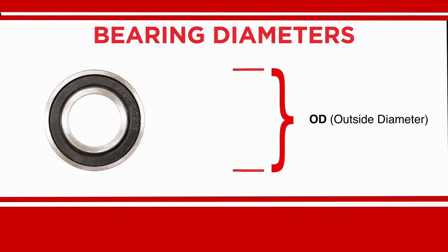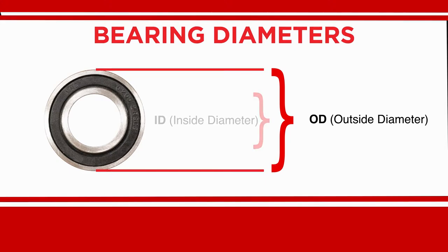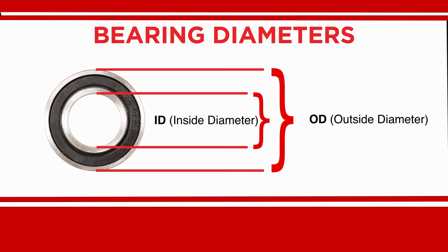There are many different sizes of bearings. The bearing outside diameter, or OD, should approximate the bore of the wheel so it fits into the bore of the wheel. The inside diameter, or ID, will determine the diameter of the bushing or axle you will require.